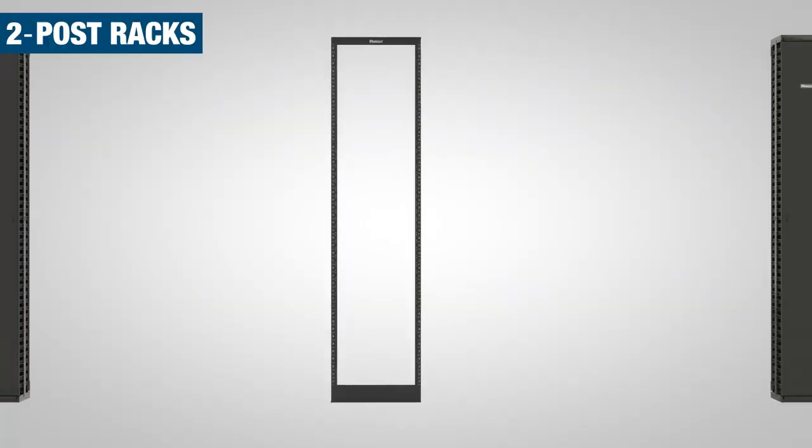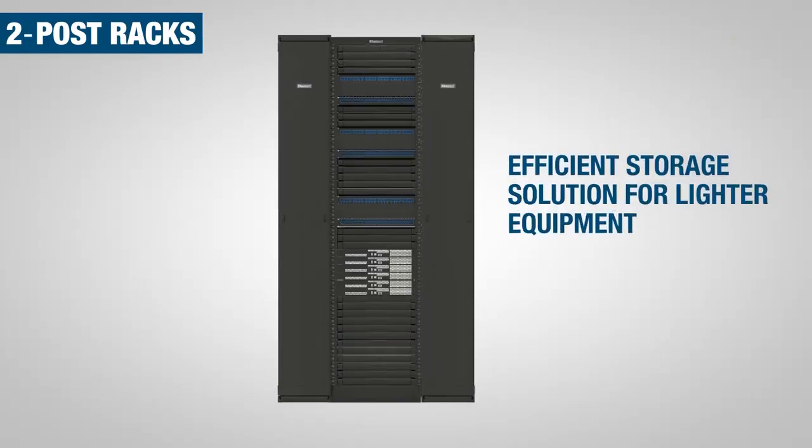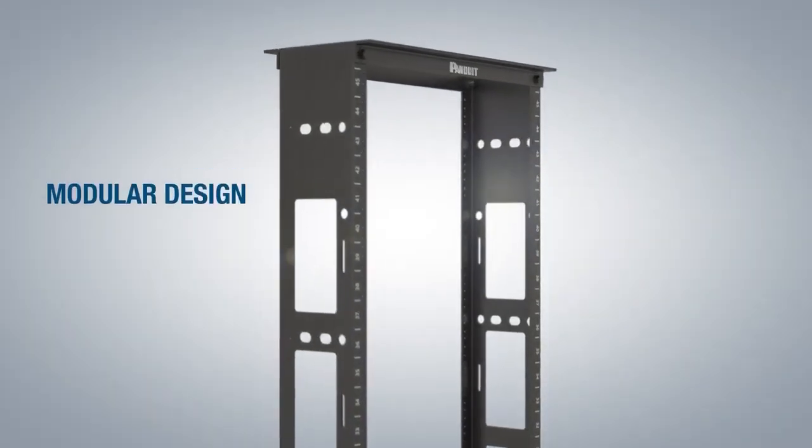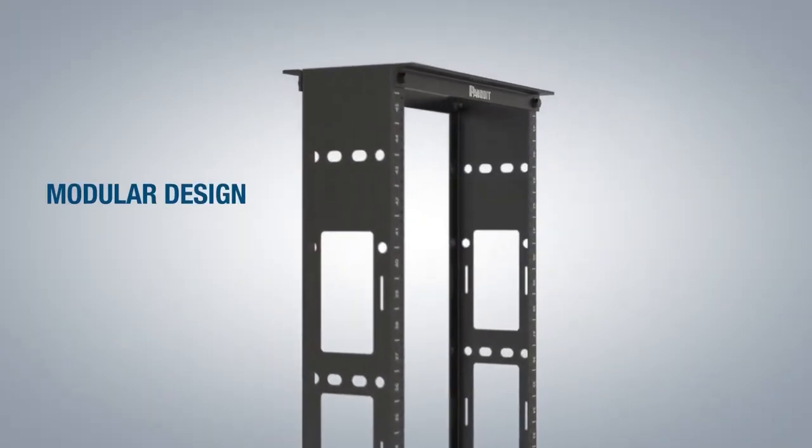Two-post racks provide compact and efficient storage for lighter equipment. They feature a modular design, making it easy to add or remove shelves and other accessories as needed.